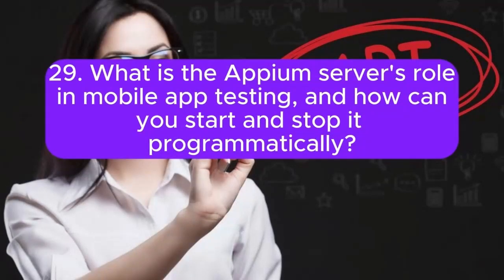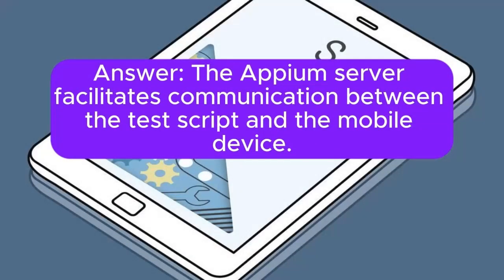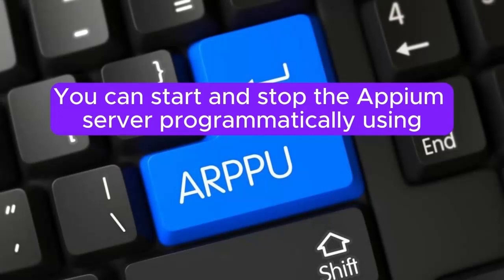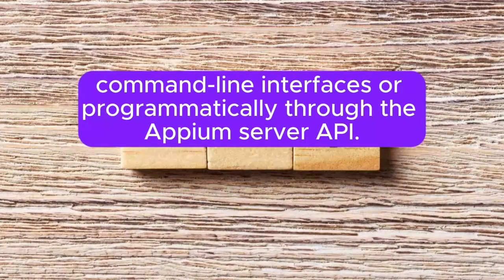29. What is the Appium server's role in mobile app testing, and how can you start and stop it programmatically? The Appium server facilitates communication between the test script and the mobile device. You can start and stop the Appium server programmatically using command line interfaces or through the Appium server API.